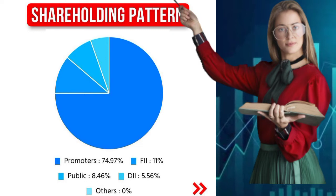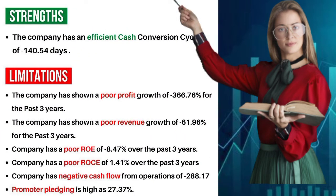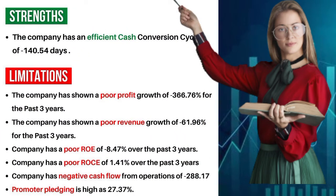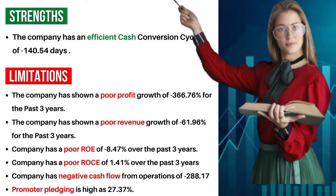Other investors zero percent. Strengths: the company has an efficient cash conversion cycle of minus one hundred and forty point fifty-four days.